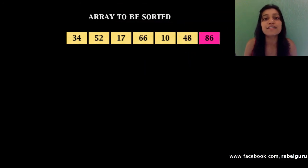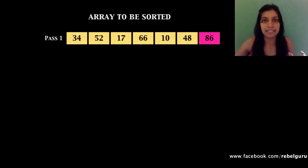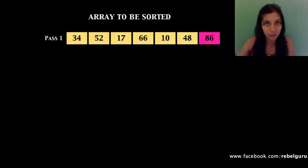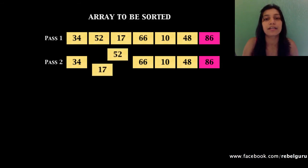Scanning elements from first to last is called a pass. At the end of the first pass in bubble sort, the position of the largest element is fixed — 86 bubbles up to the last position. In each pass, the largest remaining element bubbles up to its correct position. In the second pass, you do bubble sort on the remaining elements from 34 to 48. It compares 34 with 52 — leave them. Then 52 with 17 — swap. 52 with 66 — no swap.